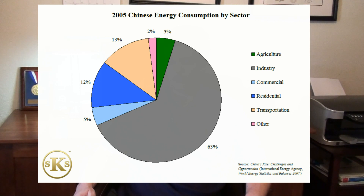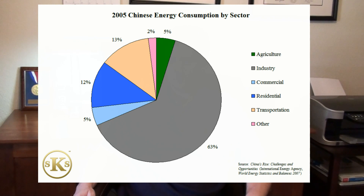China is a model for other developing economies because of its ability to build industrial capacity to export to the rest of the world. This strategy, paired with skillful management of the Yuan, has made China the world's foremost manufacturing center. Many other developed economies follow a similar model, albeit on a smaller scale than China.